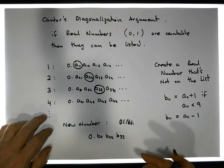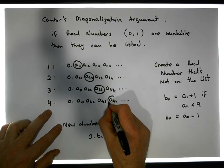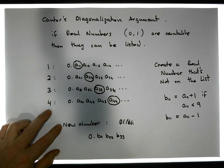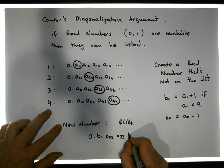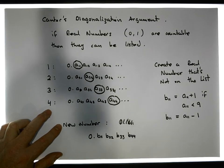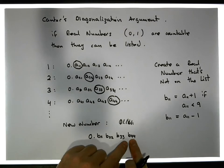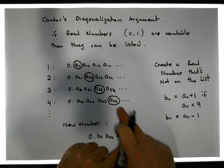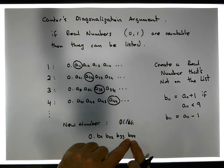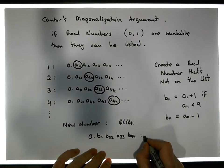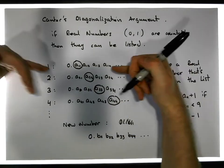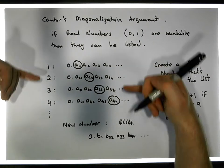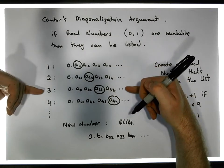And I'm going to continue on, and my fourth digit is going to be based off the fourth digit of the fourth real number that we've listed — let's call that B44. This digit is going to be different to that digit, either one more or one less than it. And we can continue in this particular fashion, because we're assuming that we can list the real numbers, meaning all of the real numbers have to occur somewhere in this particular listing.